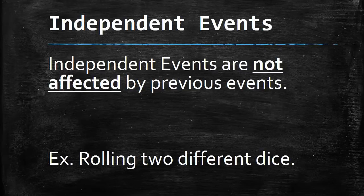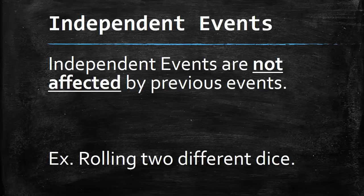When you roll two different dice, they don't affect each other. They are independent of each other. Their results are not affecting each other, so they are called independent events.